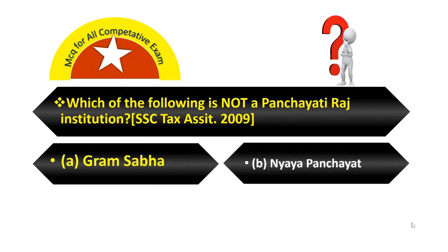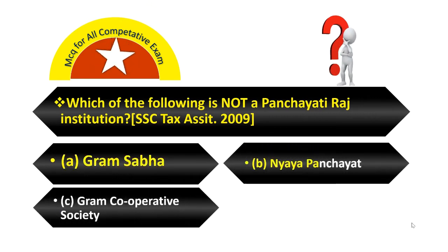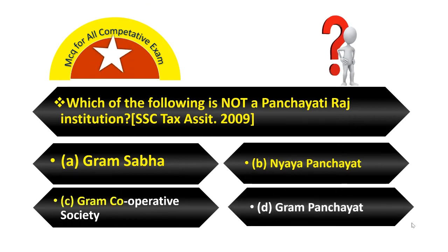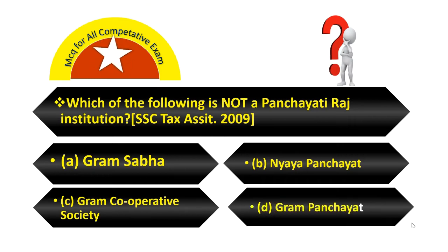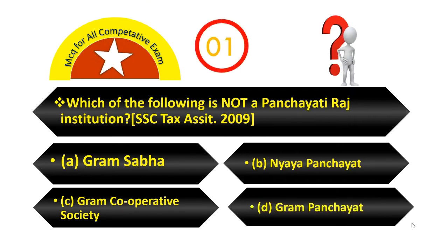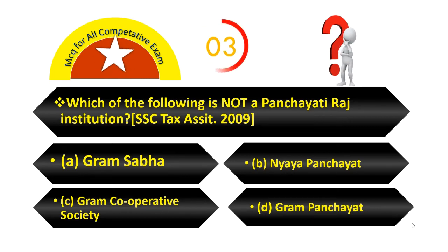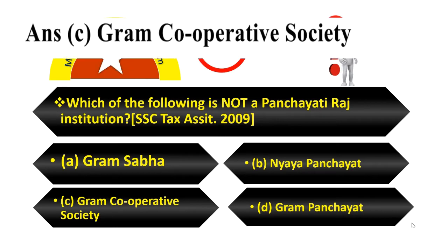Which of the following is not a Panchayati Raj institution? Option A, Gram Sabha. Option B, Nyay Panchayat. Option C, Gram Cooperative Society. Option D, Gram Panchayat. Your answer is Gram Cooperative Society.